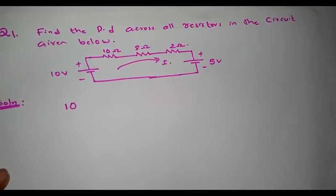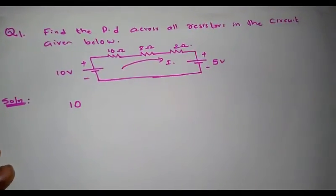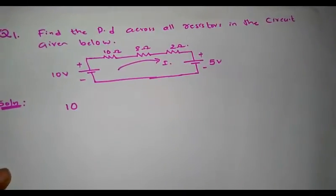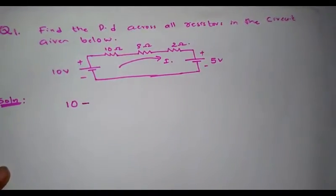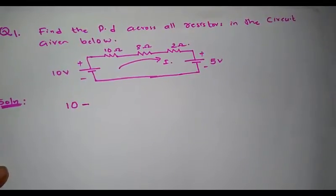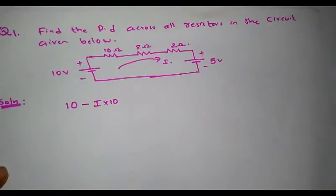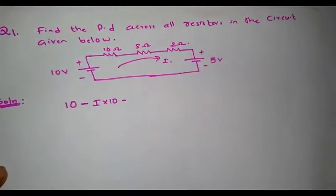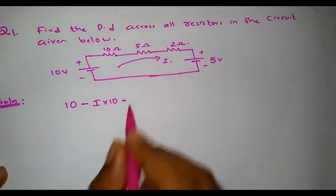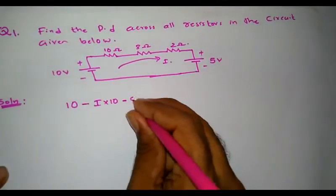From the 10 ohm resistance, I am moving in a clockwise direction and the direction of current is also clockwise. I am writing the current direction from left to right, so there is a falling potential. I write the potential drop as negative: that is negative I×R, which is −10I. Again, the next resistance is 8 ohm. Here also the current and the direction of traverse are the same, so I write −8I.